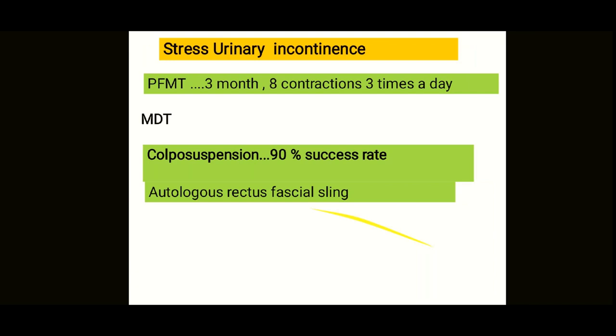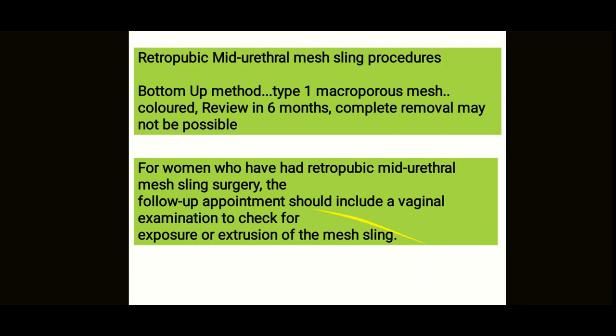Mesh is very controversial. Retropubic mid-urethral mesh sling procedures can be used, but they were banned due to too many complications. Currently they can be performed only with careful ongoing monitoring. The bottom-up method is used, with type 1 macroporous mesh, which should be colored for identification and reviewed at six months. Complete removal may not always be possible. Patients must be counseled about complications — extrusion and irritation are common. For women who have had retropubic mid-urethral mesh sling surgery, follow-up should include vaginal examination to check for mesh exposure or extrusion. All mesh-related complications must be reported to MHRA.